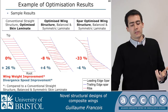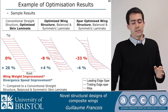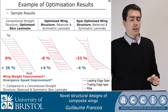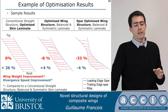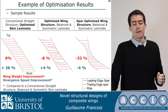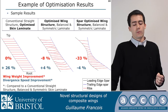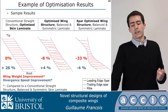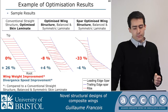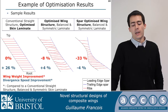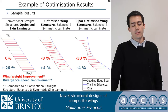Here are some results across three different types of optimizations. On the left, a purely stacking sequence optimization: no wing weight improvement, but divergence speed increased by 26%. The middle case optimizes the whole wing structure — both spars and rib shape — producing an 8% reduction in wing weight and a 4% improvement in divergence speed. The right case is a spar-only optimization: we can reduce wing weight by 33%, but divergence speed is also reduced by 4%.